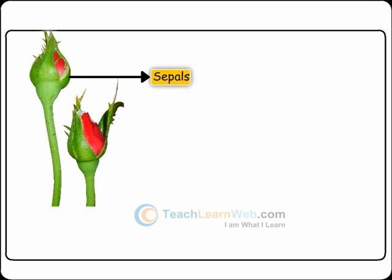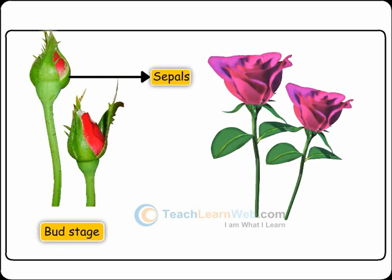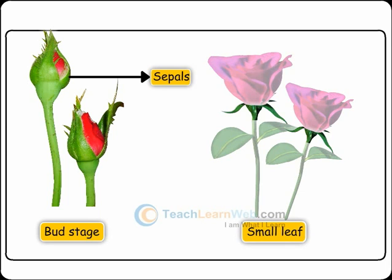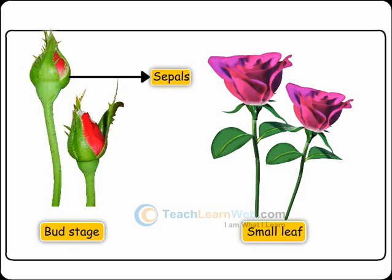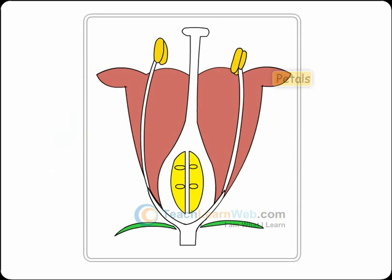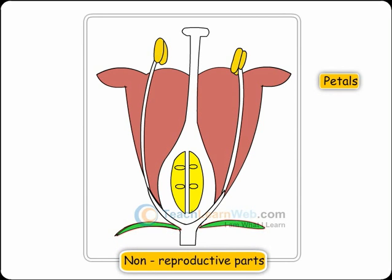It is protected by sepals at its bud state. Sepals are small leaf-like structures present under the petals. Petals are the colourful structures which can attract insects. Petals and sepals together are called as non-reproductive parts.